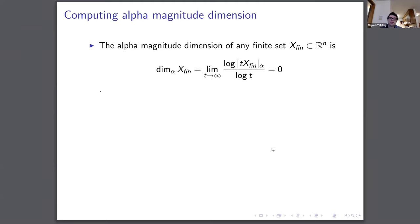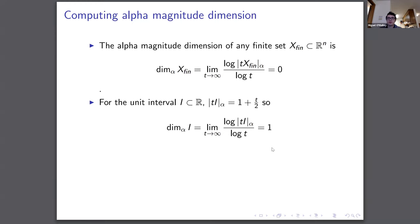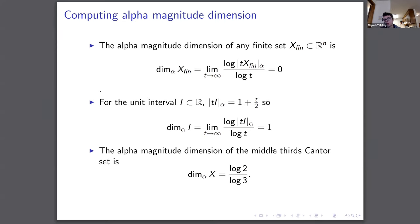Some examples: the alpha magnitude dimension of any finite set contained in the reals is zero — the numerator is bounded by the cardinality while the denominator goes to infinity. For the unit interval, the magnitude function has the form one plus T over two, and the limit of log(1 + T/2) over log T goes to one. And we show that the alpha magnitude dimension of the middle thirds Cantor set is log two over log three — which is highly desirable, agreeing with the Minkowski dimension of the Cantor set.